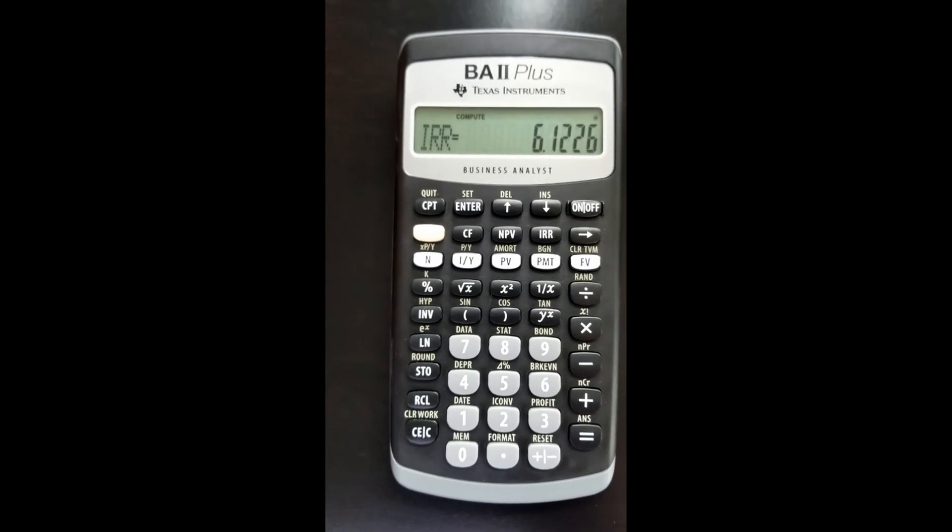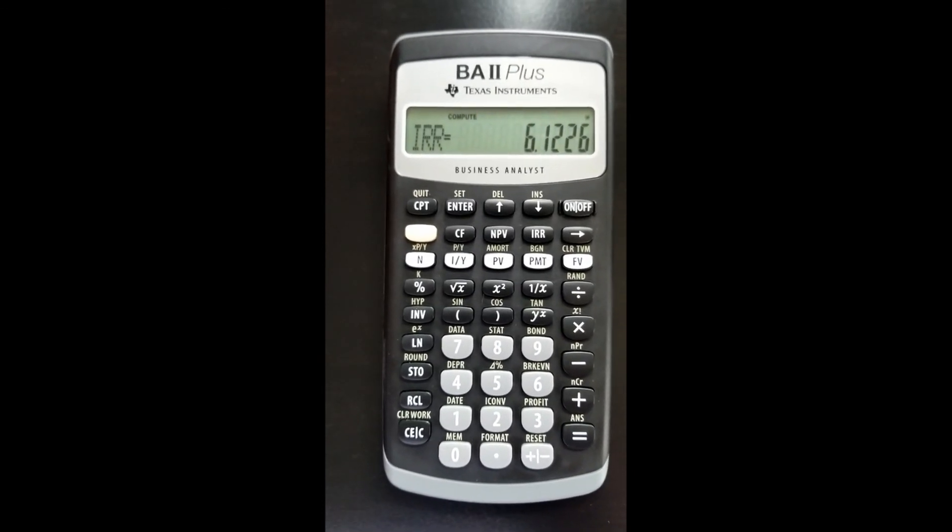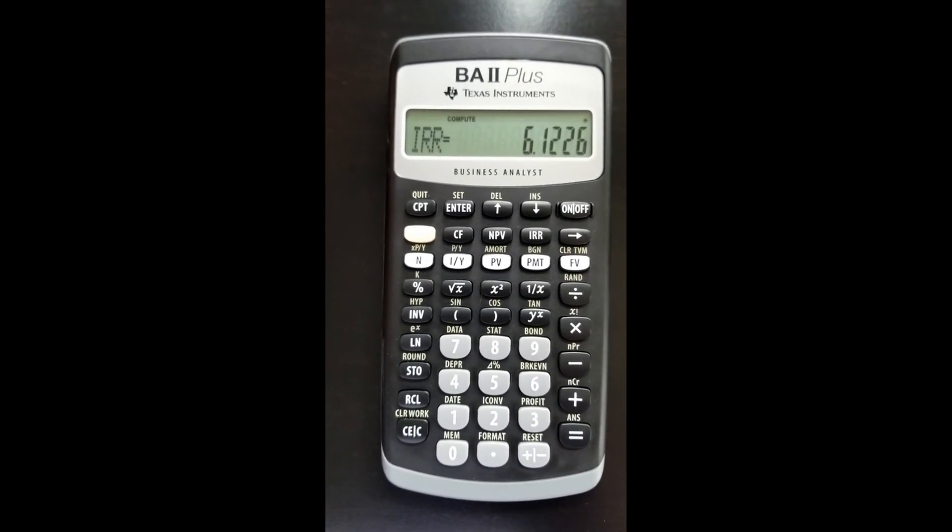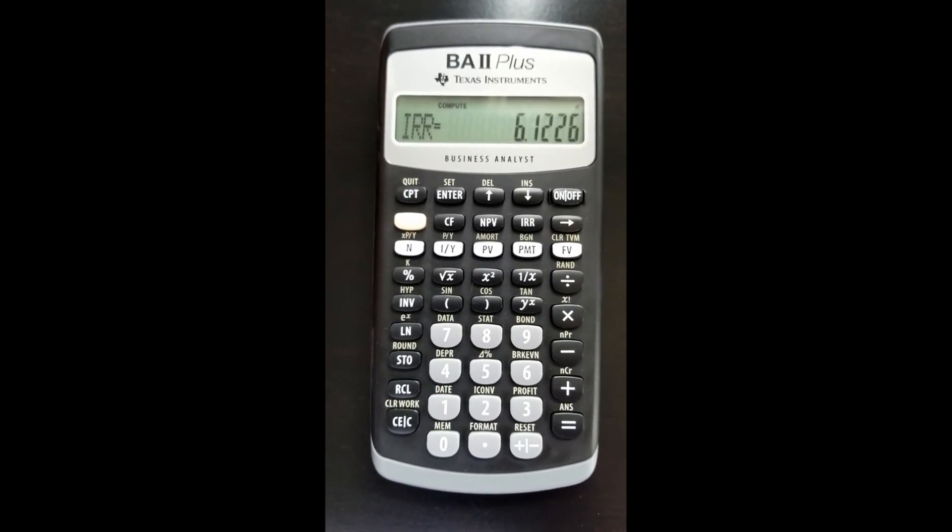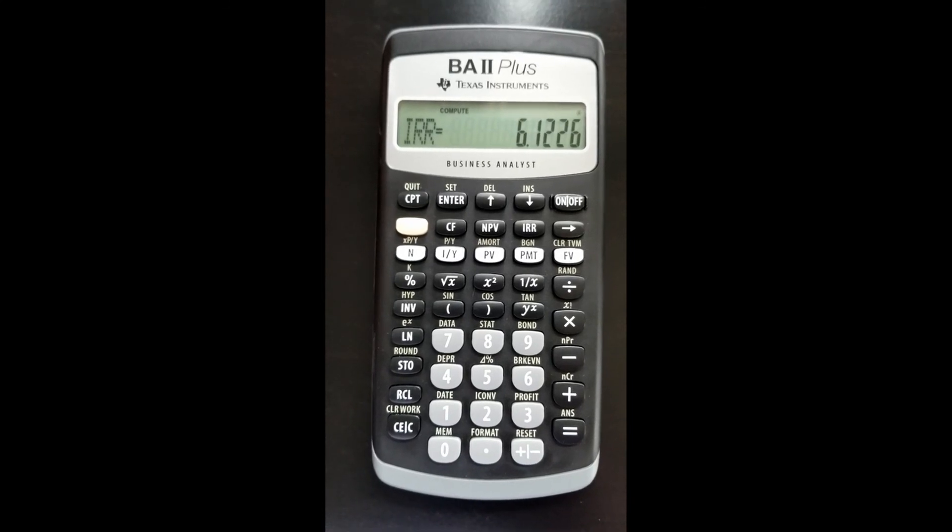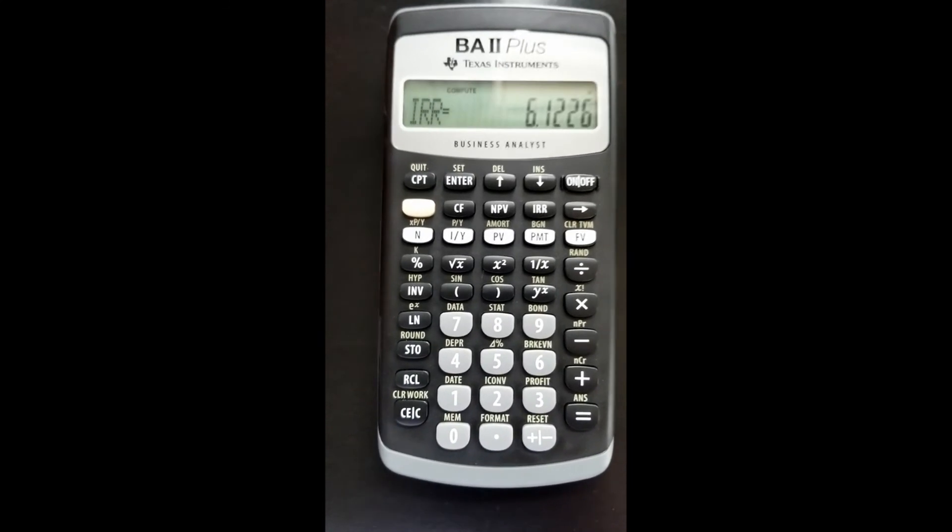We find out that the IRR, the rate that makes our NPV equal to zero, is 6.12%. Because 6.12 is lower than 10%, which was our required rate of return or our discount rate, we reject this project.